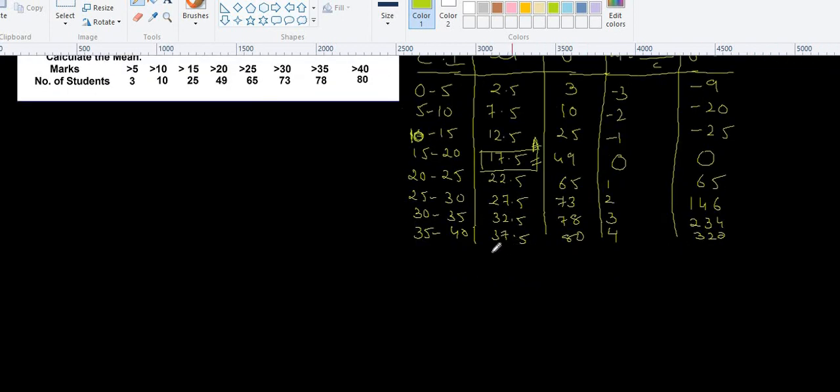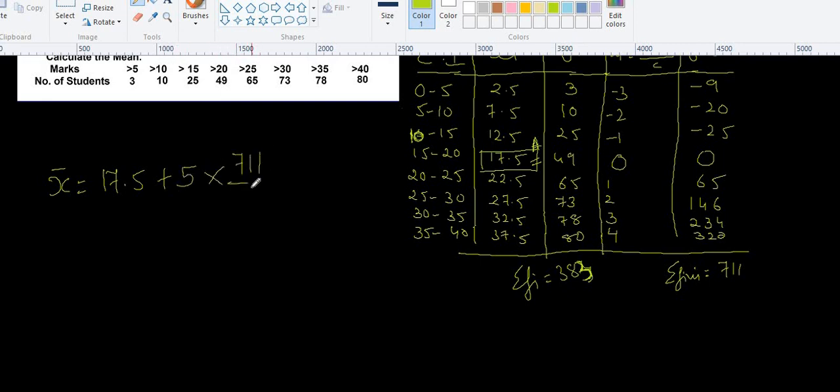If you add, so here sigma fi will be 383, sorry, it is 383, not 84, it is 383. And sigma fi Ui will be 711. Now placing them there in the value, so x bar, what is our mean, assumed mean 17.5, plus class length is 5, multiply by 711 upon 383. So what you get here, 17.5 plus, if you solve this one, you get 9.28, 9.28, that is coming up to how much, 26.78. So this is our mean. I hope you understood this sum.